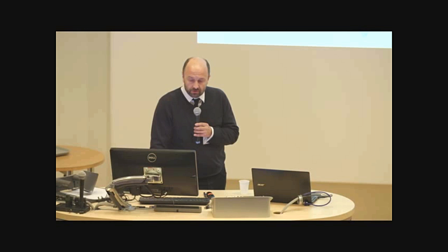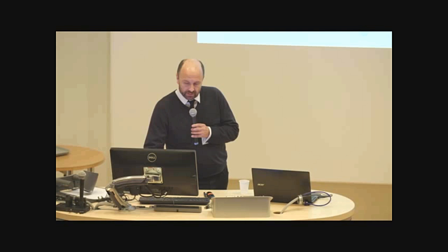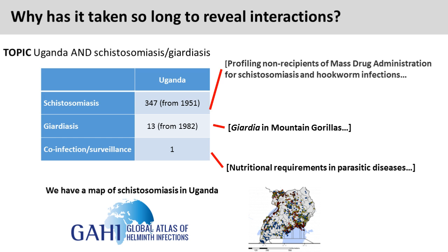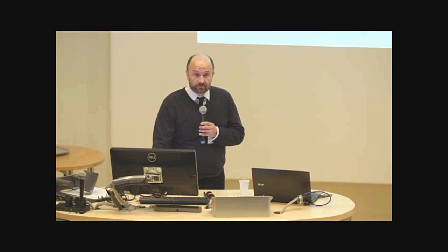An interesting thing when you think of the widespread nature of Giardia: unlike schistosomiasis, there is a global atlas of helminth infections, and here we have the map of schistosomiasis in Uganda showing hyper-endemic zones around Lake Victoria and Lake Albert. This poses the question: do we have a map for Giardia? We don't. There's actually no information on this parasite at all at a public health level to look at the associations between the two diseases.